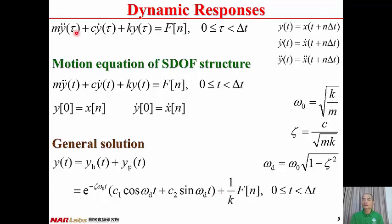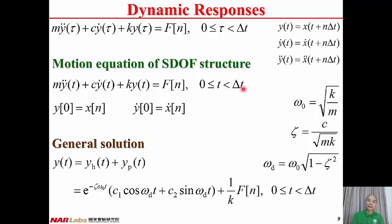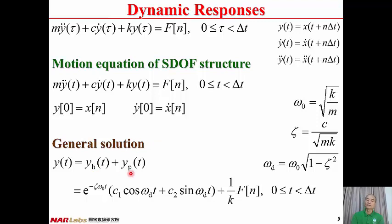Tau varies from zero to delta T, and F_n is constant. The initial conditions are: y(0) = x_n and y-dot(0) = x-dot_n. If we rename the variable tau by T, the motion equation becomes M y-double-dot plus C y-dot plus Ky equals F_n, valid for 0 ≤ T < delta T, with initial displacement y(0) = x_n and initial velocity y-dot(0) = x-dot_n. Because this is a non-homogeneous ODE, the general solution consists of a homogeneous solution and a particular solution.